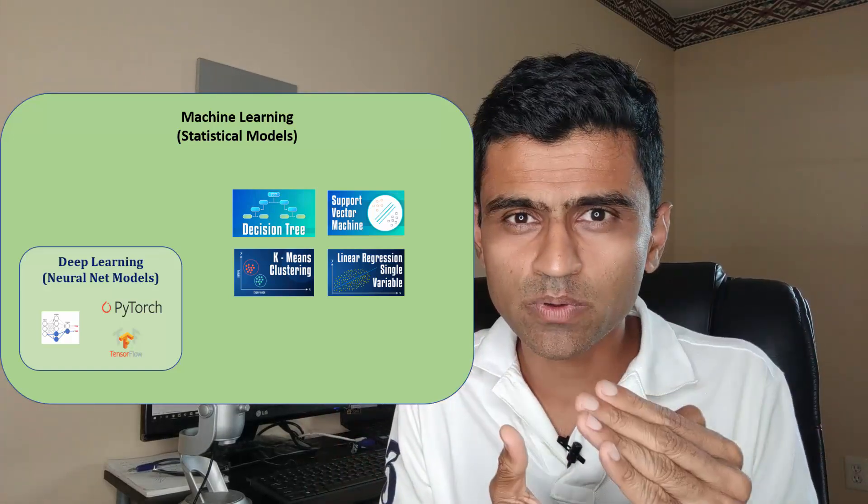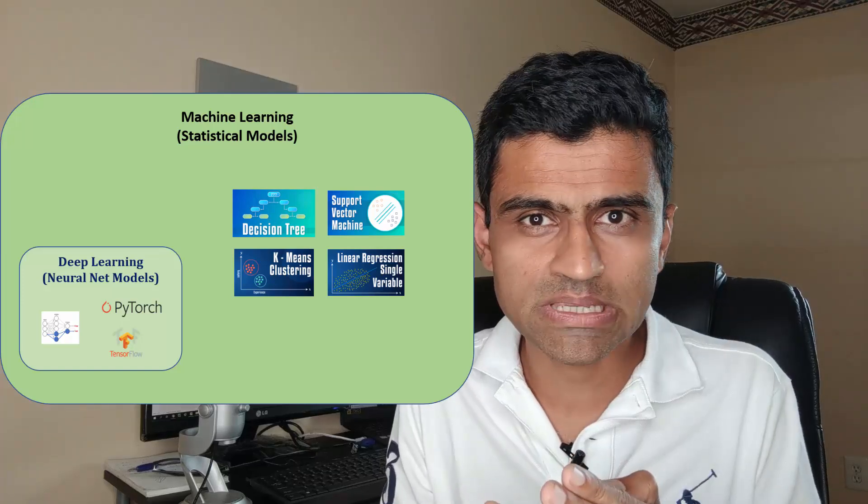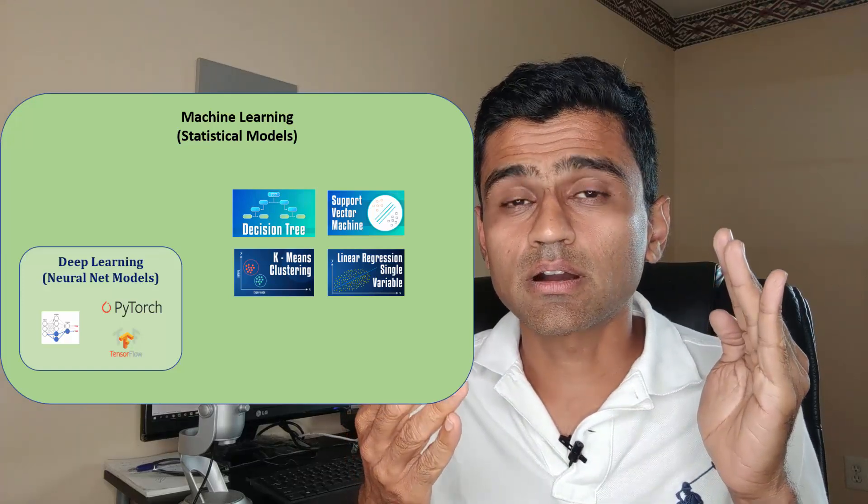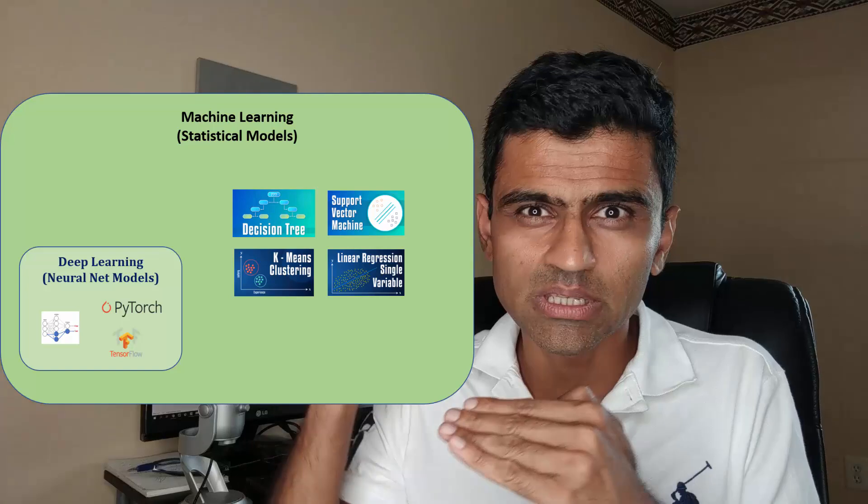In machine learning, there is supervised learning, unsupervised learning, and clustering. These are the three subdomains.